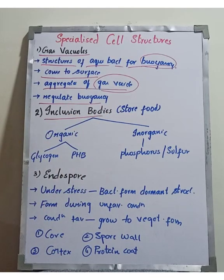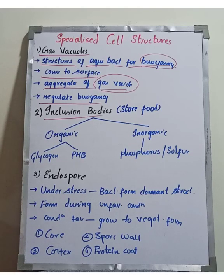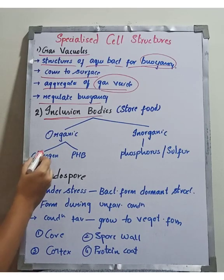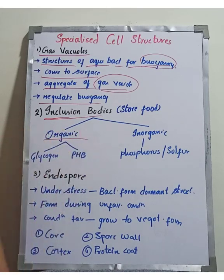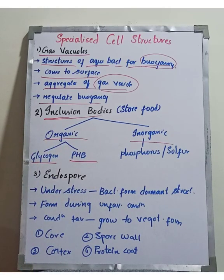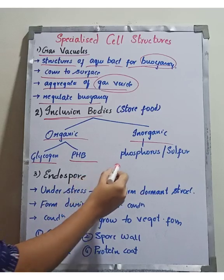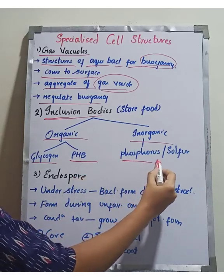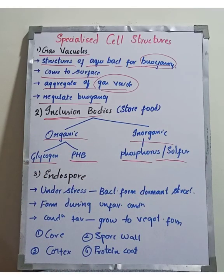The second special structure is inclusion bodies. Inclusion bodies are specialized structures found in bacteria. There are two types: organic inclusion bodies and inorganic inclusion bodies. Organic inclusion bodies include glycogen granules and polyhydroxybutyrate granules. Inorganic inclusion bodies include phosphorus or sulfur granules.